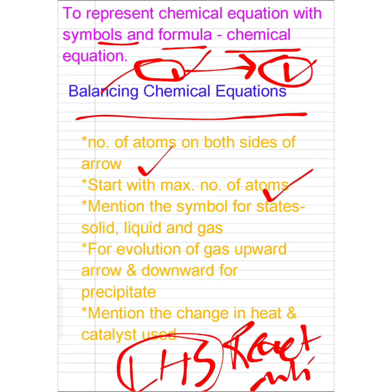Second point: start with the maximum number of atoms. For example, suppose in both sides we look at the oxygen atom. If in the reactant the oxygen atom count is 2, and on the right hand side the oxygen atom count is 6, then 6 is the highest number. So we will try to solve first with the highest number of atoms — that is, start with the maximum number of atoms.